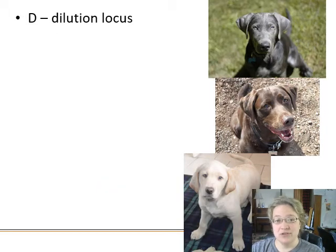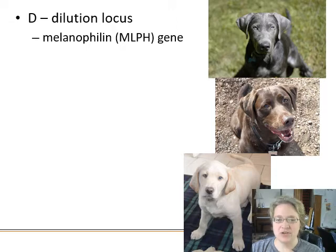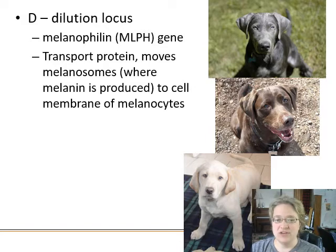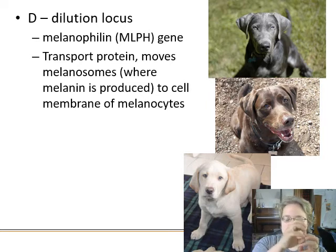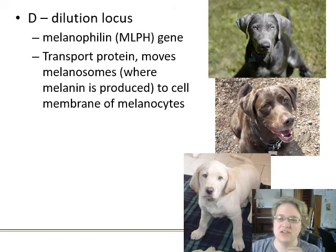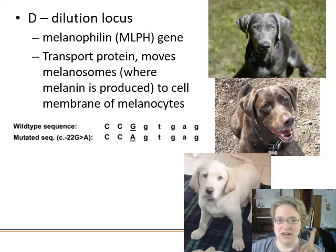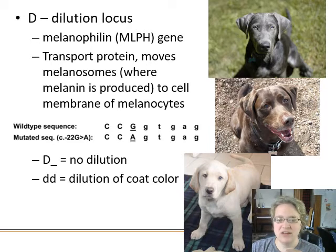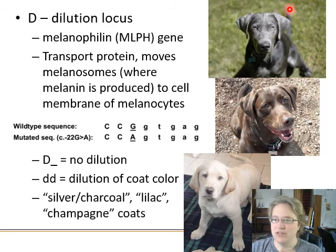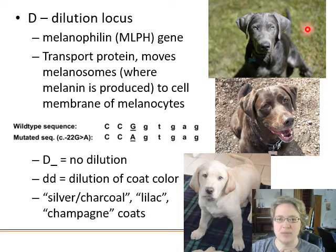There's another locus — the dilution locus — which controls a gene called the melanophyllin gene, a transport protein. Melanin is produced in cellular organelles called melanosomes, and this protein moves melanin to the cell membrane of melanocytes where it gets deposited into hair follicles. There is a single point mutation in the sequence for melanophyllin — if you have a functional copy you see no dilution, but if you're homozygous for the mutant you get a lovely diluted, lightened, shiny coat color.